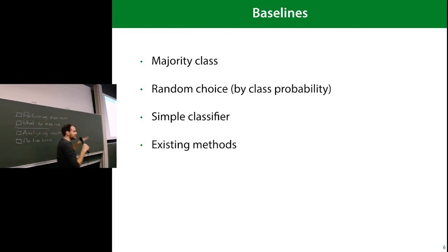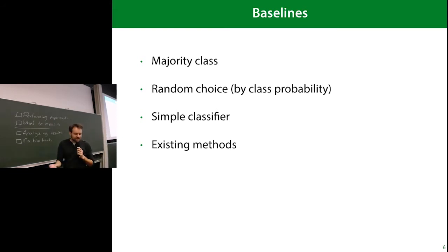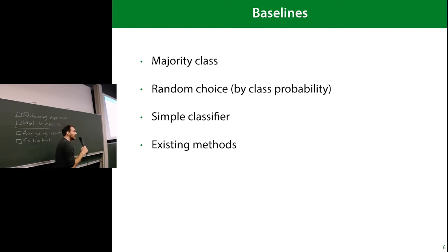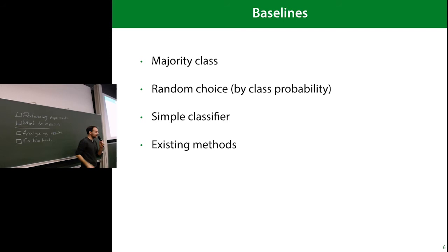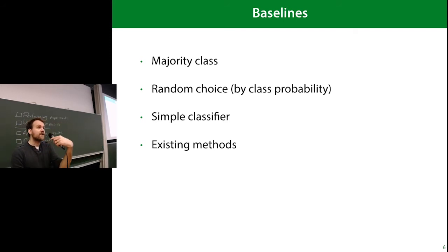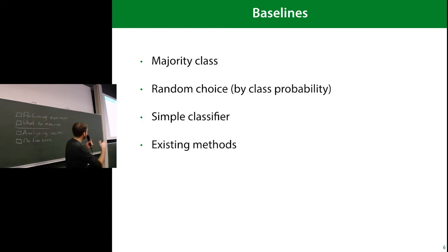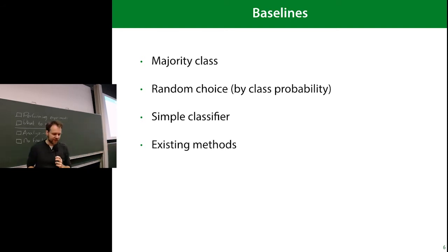If a linear classifier does just as well as your complex model, then the extra complexity isn't justified. And of course if your aim is to beat existing methods, if there are existing methods in the research, you want to compare to those — those are also called baselines. So if you check a few of these baselines, it will give you a good bearing on what kind of accuracy is actually impressive.